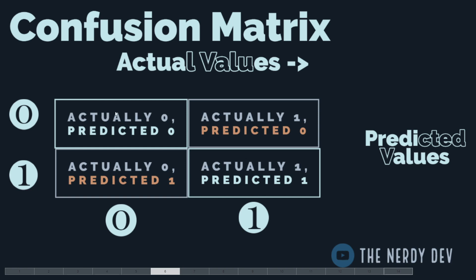Case 1: actual label is 0 and predicted value is 0 — a correct classification. Case 2: actual value is 1 and predicted value is 0 — an incorrect classification. Case 3: actual label is 0 and predicted value is 1 — an incorrect classification. Case 4: actual label is 1 and predicted value is 1 — a correct classification.